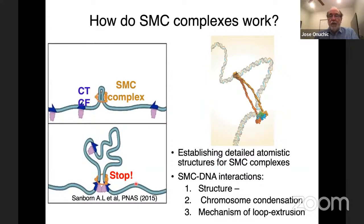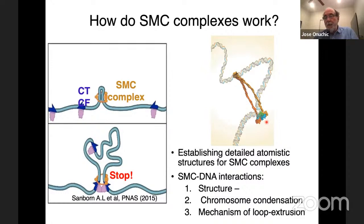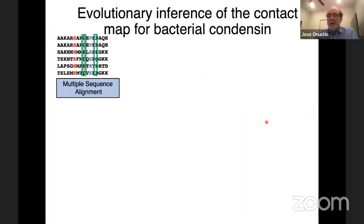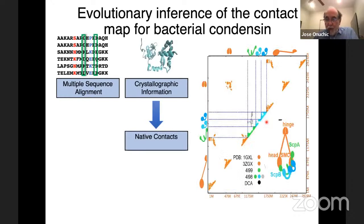These SMC proteins — condensin, cohesin — bring two parts of DNA together and form loops. This is responsible for chromosome condensation. For example, you need large amounts of condensin to go from interphase to mitosis. These are the main proteins involved in loop formation in chromosomes. When you look at this very large protein, you have two SMC subunits forming a dimer, and you have other proteins — SSPA and SSPB — that make this sort of kleisin complex. That's the functional part, where phosphorylation takes place.